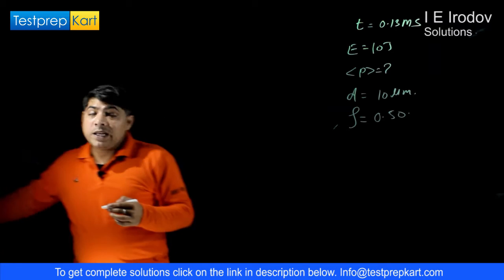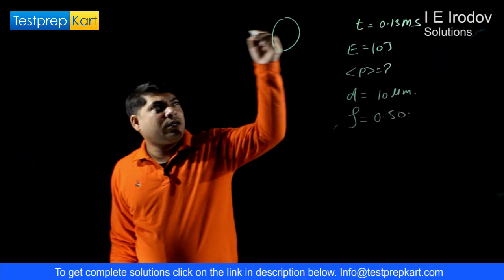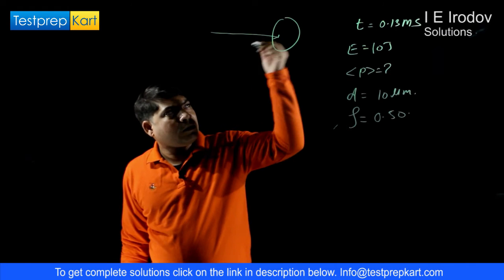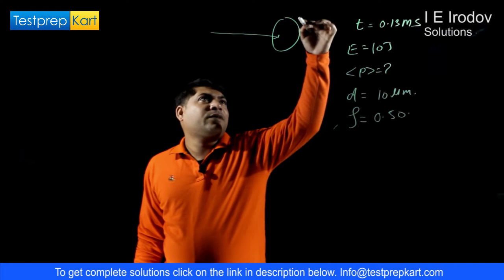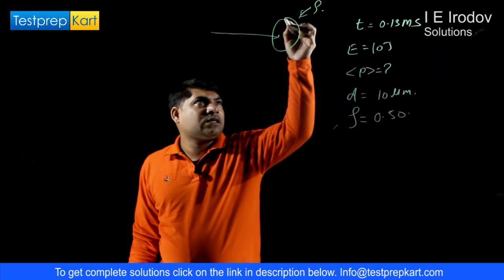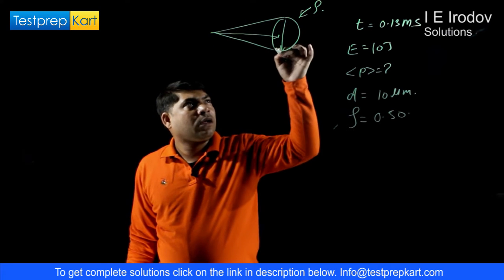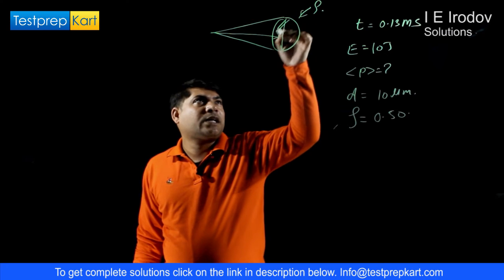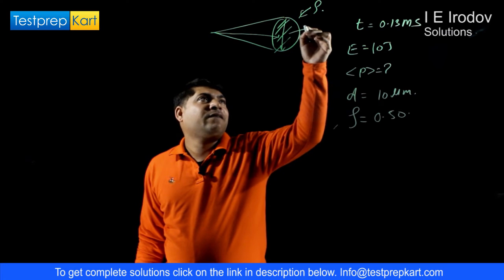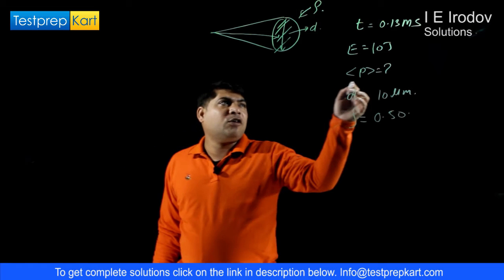So basically in this problem a laser beam is falling on a surface. This surface having reflection coefficient rho and this laser beam is forming a circular spot having diameter d. So we have to find out mean pressure.